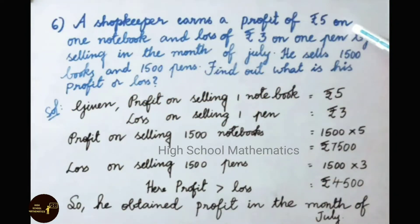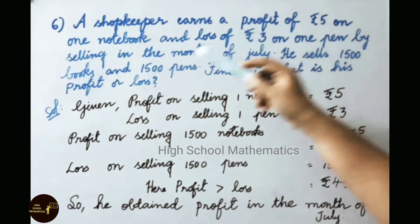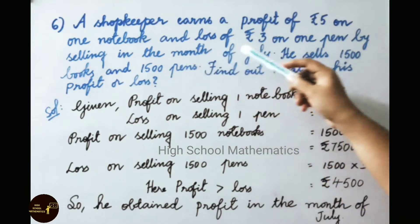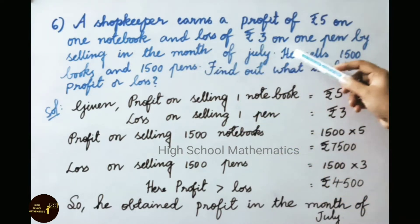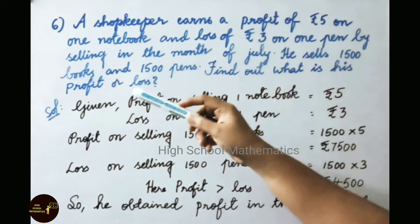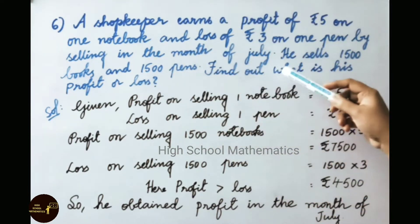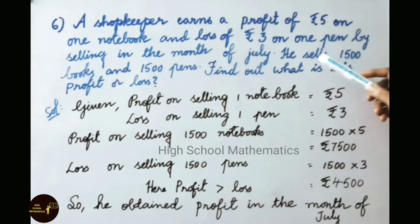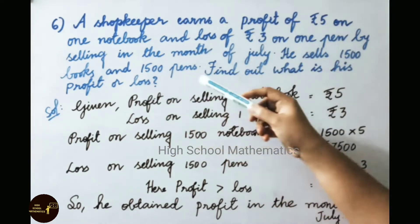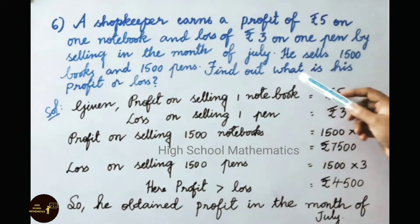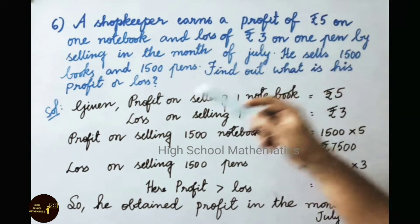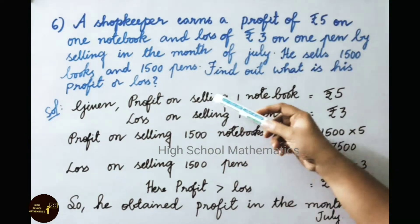See now question number 6. A shopkeeper earns a profit of 5 rupees on one notebook and a loss of 3 rupees on one pen by selling in the month of July. He sells 1500 books and 1500 pens. Find out what is his profit or loss.